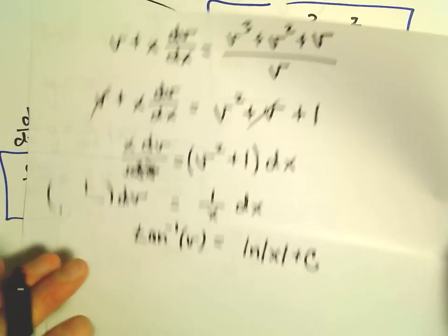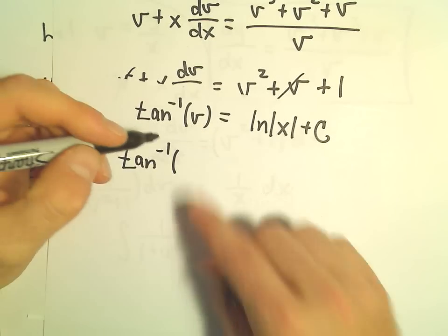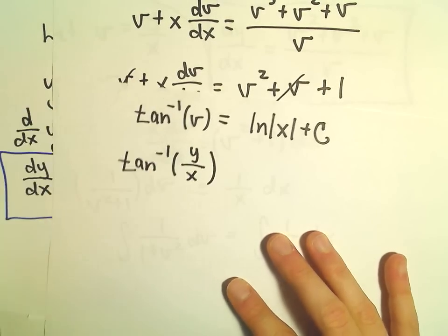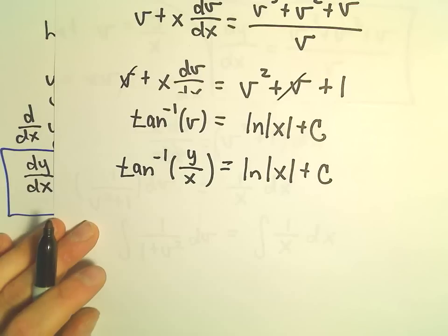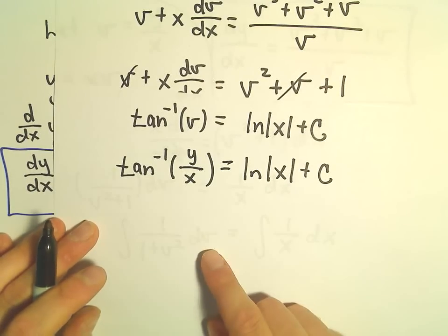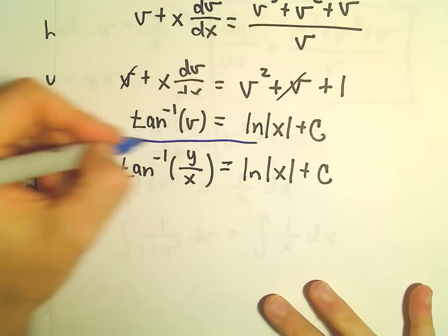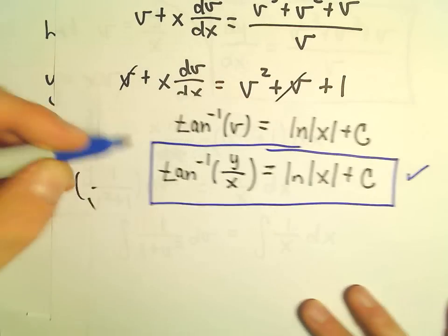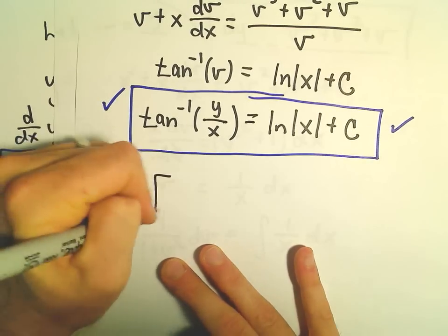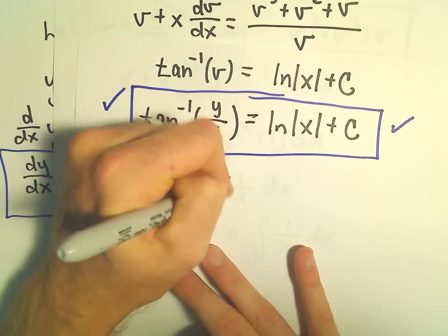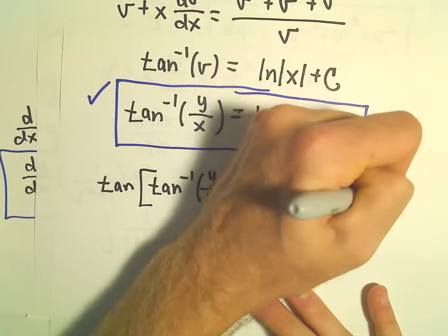The last thing we need to do is undo our substitution. We let v equal y/x, so we substitute that back in, giving arctan(y/x) equals ln|x| + C. If we want, we can take tangent of both sides: tangent of arctan(y/x) equals tangent of (ln|x| + C).